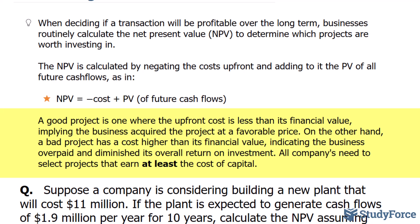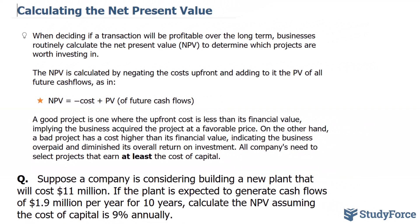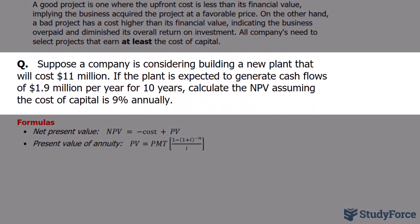When we get a negative NPV, it's technically considered a bad project because it doesn't earn at least the cost of capital or the upfront cost. Let's take a look at a scenario and do some calculations. Suppose a company is considering building a new plant that will cost $11 million. If the plant is expected to generate cash flows of $1.9 million per year for 10 years, calculate the net present value, assuming the cost of capital is 9% annually.